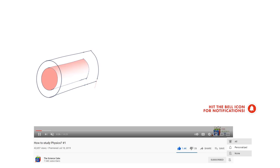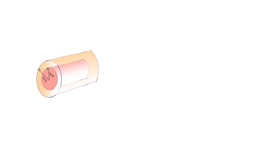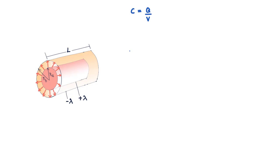Now let us look at yet another capacitor design: two long coaxial cylinders. The inner one has radius Rₐ and the outer one has radius R_b. Assume linear charge density λ on each, with opposite charges. We use C = Q/V where V is the potential difference between the cylinders. The absolute value of charge on each cylinder is λ·L, which is your Q. Quite like the spheres, the outer cylinder has no influence on the electric field and potential inside.